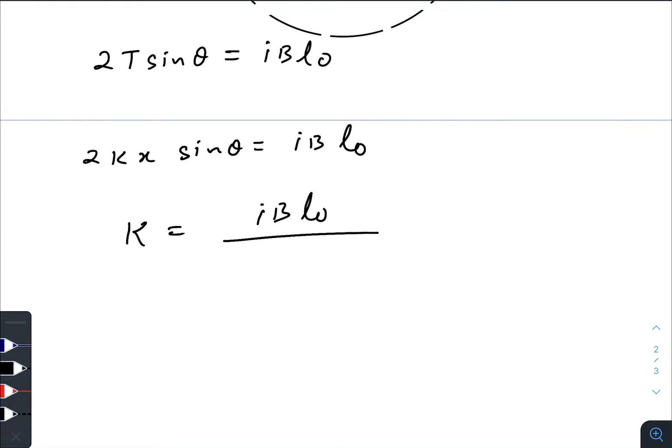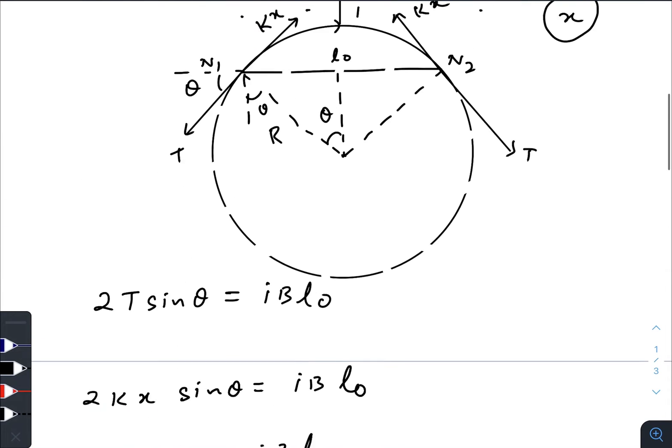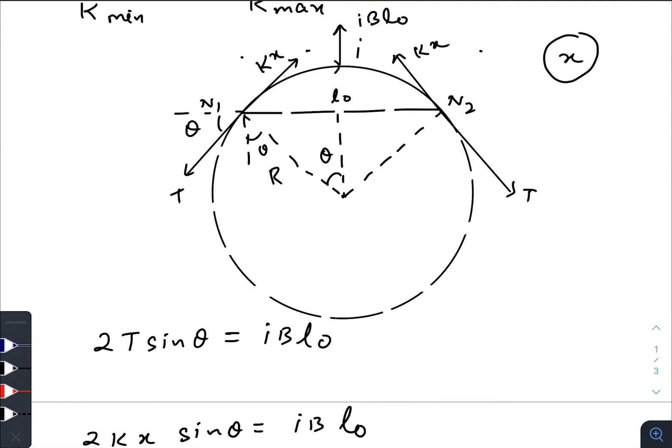So k equals IBl₀ divided by 2x sin θ. x is generally the stretching, so for any given theta the stretching would be the length of the arc minus the initial length.